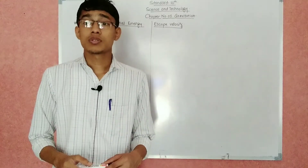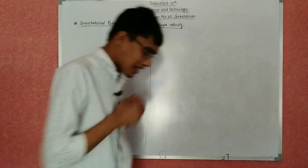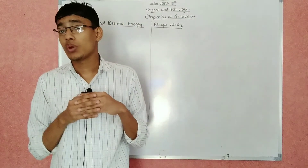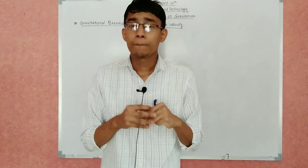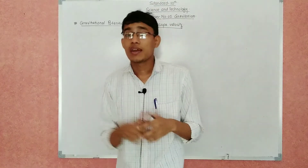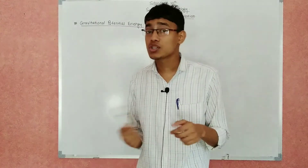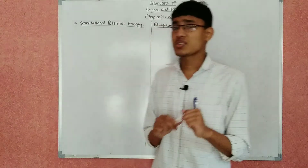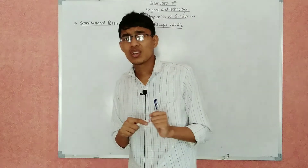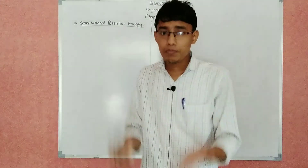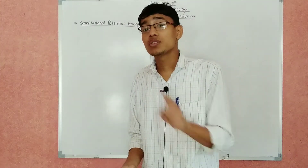Good morning students. In this lecture we are going to see gravitational potential energy and escape velocity from chapter number one, Gravitation. We know there are various types of energies — potential energy, kinetic energy, mechanical energy, chemical energy, muscular energy, biological energy, and so on. Potential energy is the energy which is created in an object due to the position of that object.